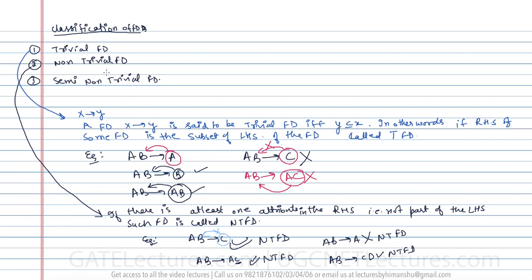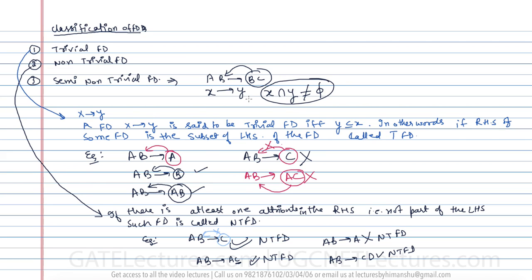We generally use trivial and non-trivial; semi-non-trivial we don't really use, but roughly: if a functional dependency like AB determines BC has some part of the right-hand side common with the left-hand side, it is called semi-non-trivial. That means if X determines Y and X intersection Y is not equal to phi, then it is a semi-non-trivial functional dependency. Now let us look at some inference rules, also called Armstrong axioms, in case of functional dependencies.